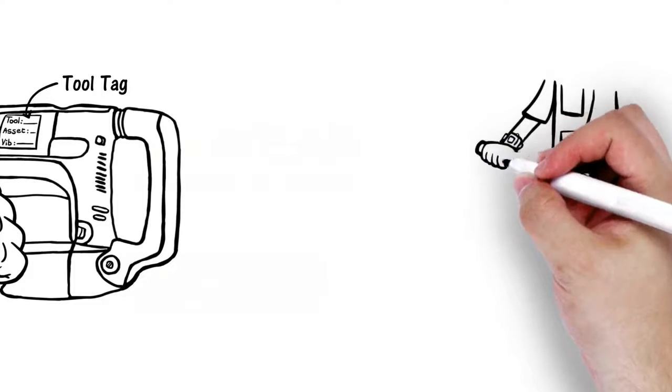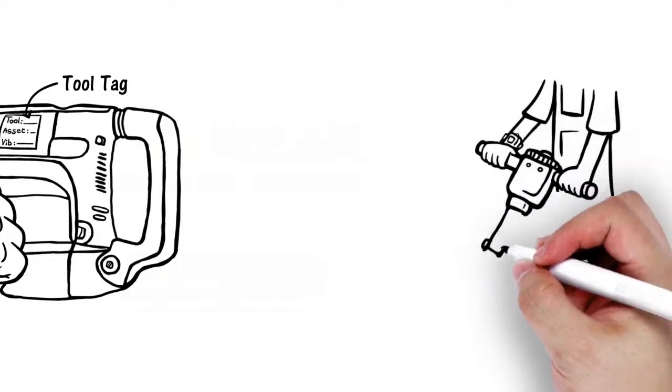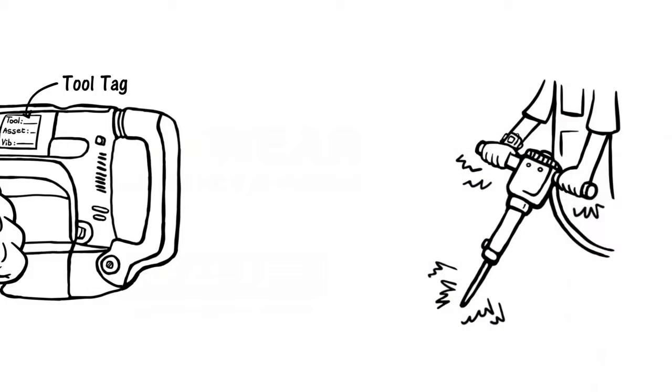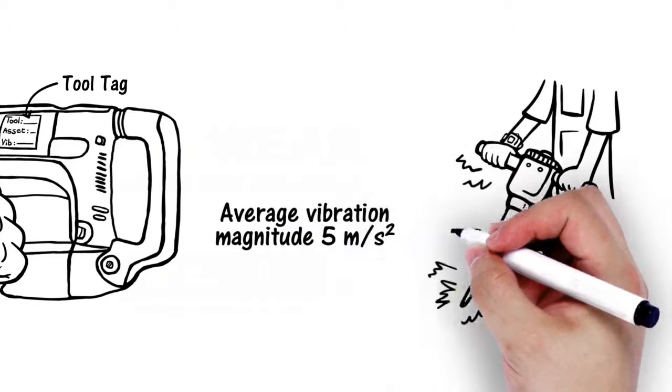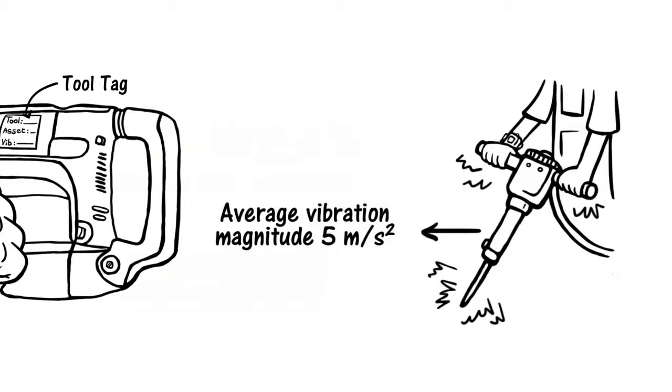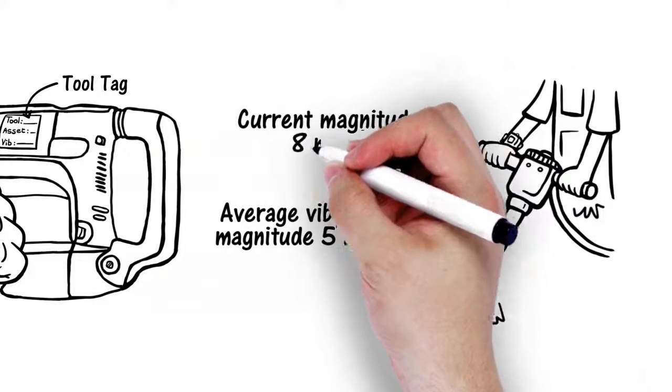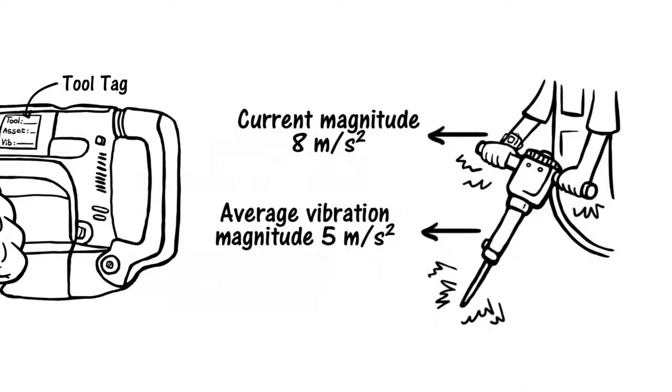But what is truly unique about the Havware is that a company can decide to either calculate HAVS risk exposure points using predefined tool vibration magnitudes or from the vibration sensed on the wearer's wrist during real time tool use.